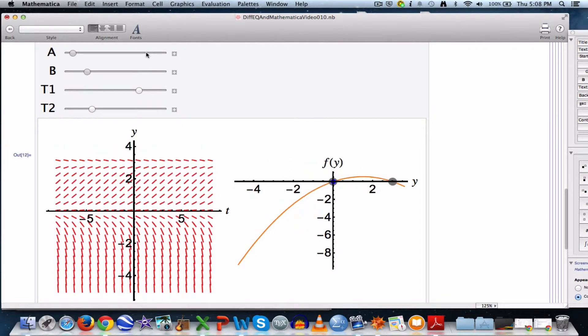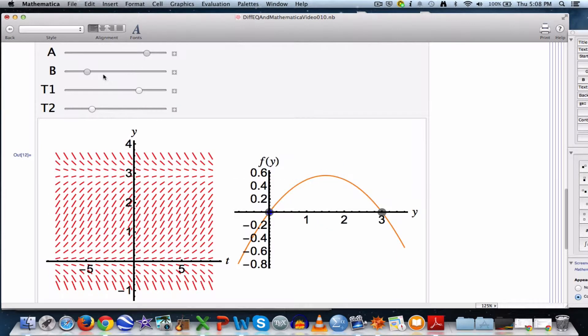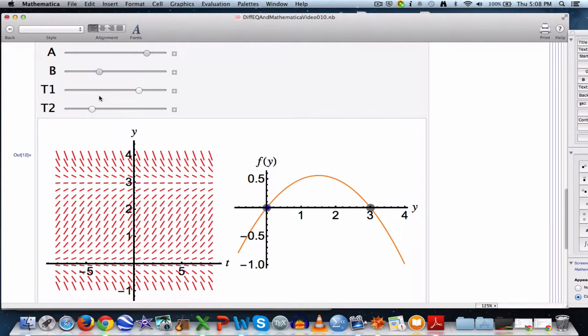You see that changing in the vertical direction on the left and the horizontal direction on the right. I can make the b, the right endpoint for y, also change. I can make it bigger. So you can make both of those change. I'll go back more toward the defaults now.